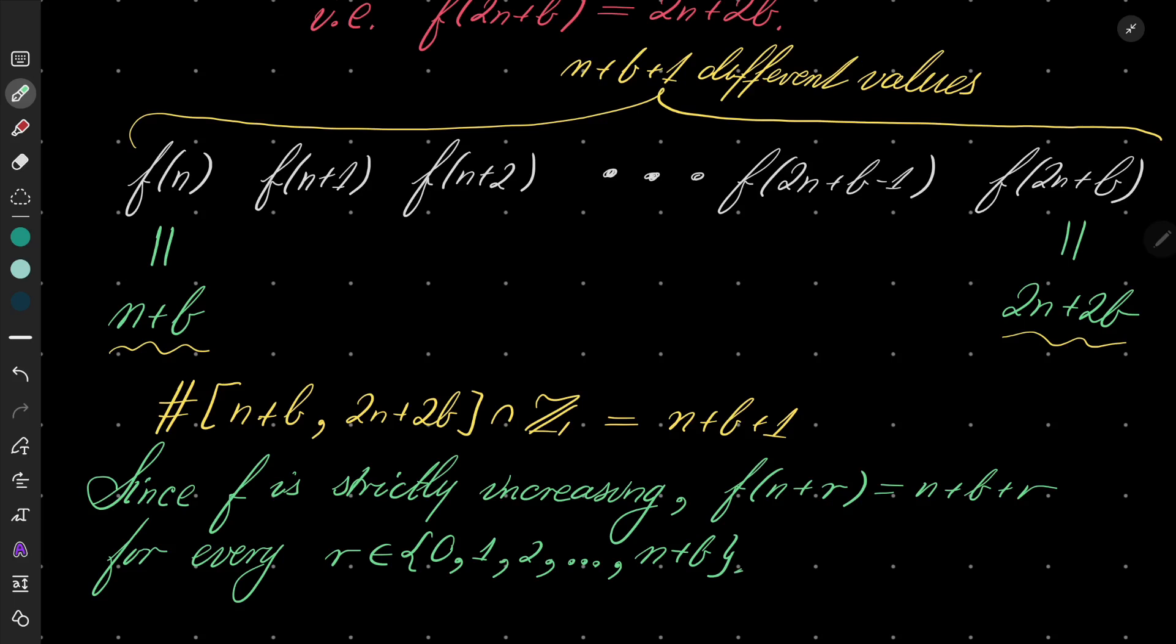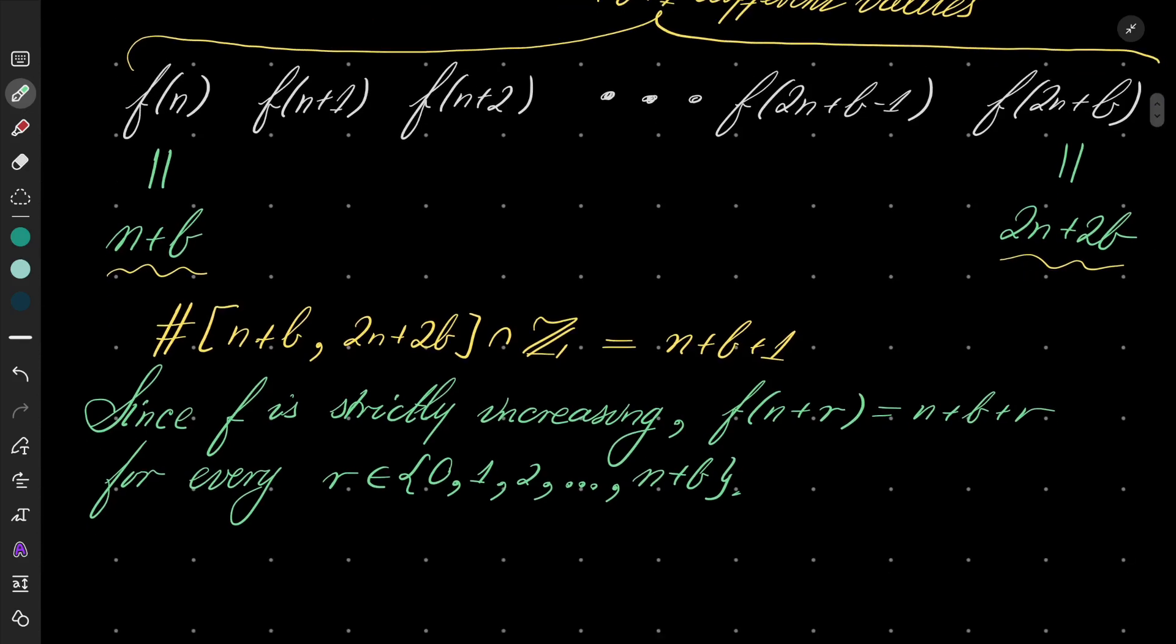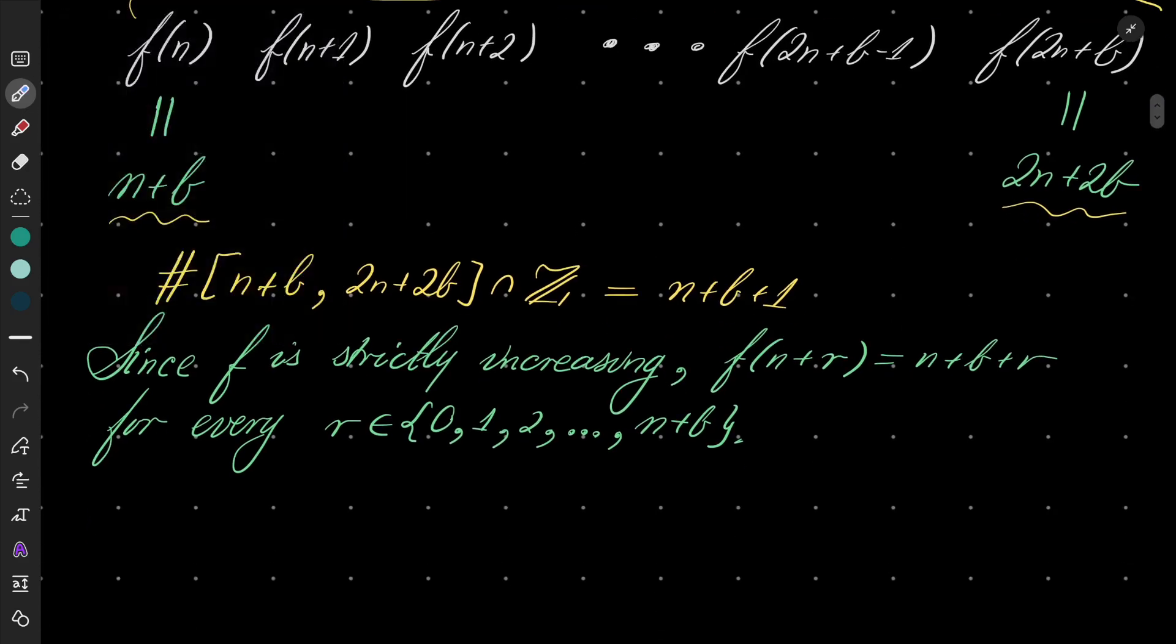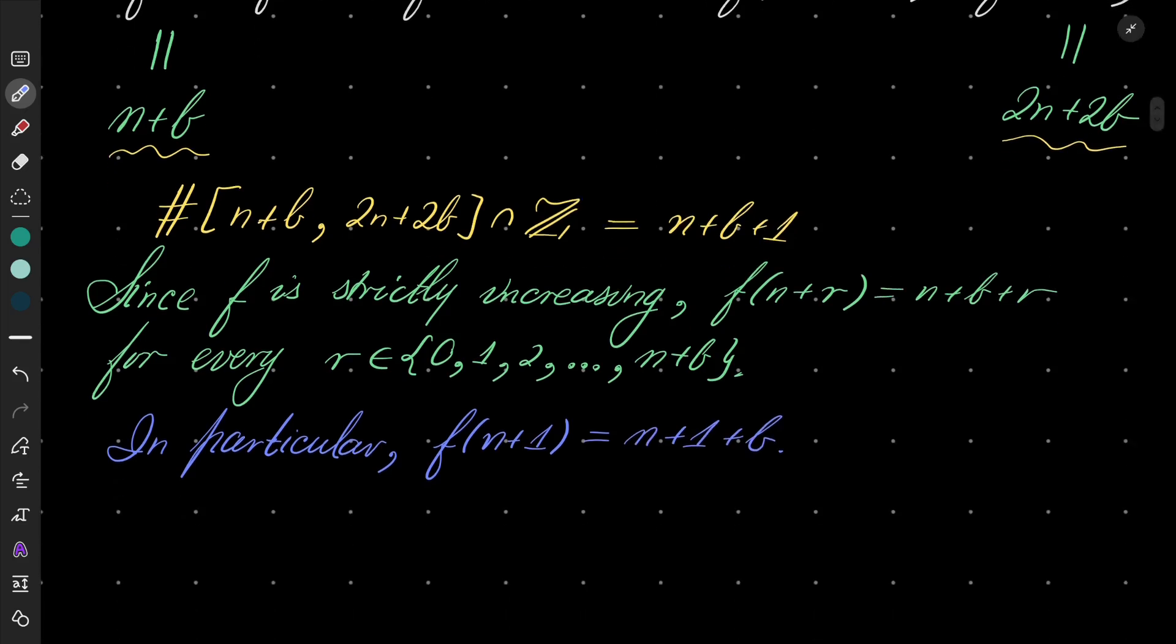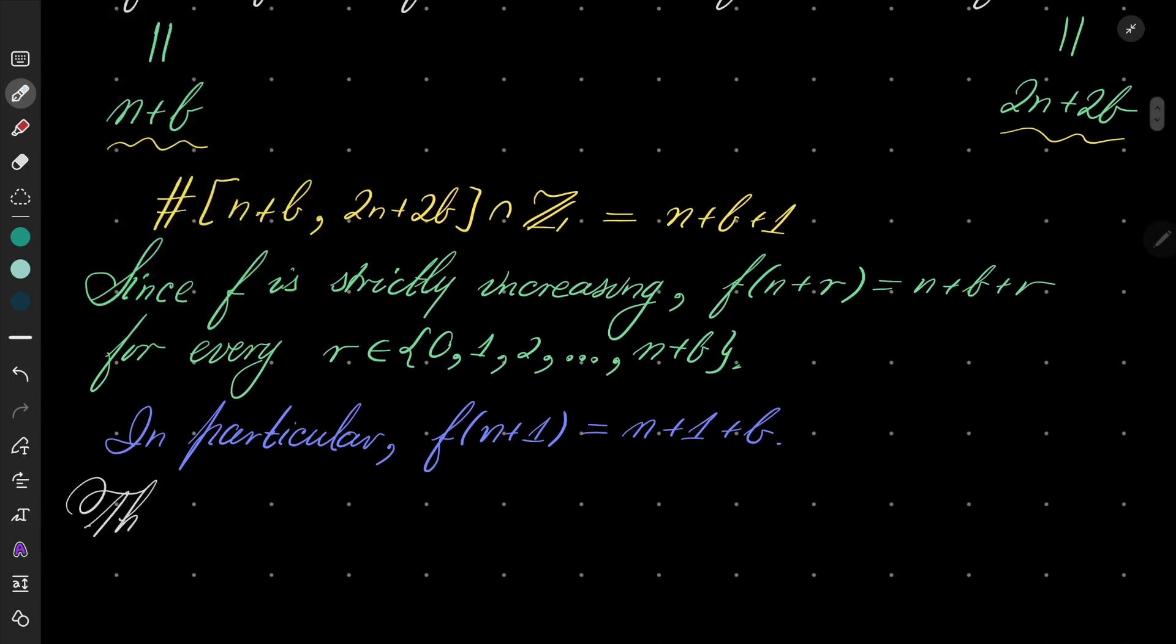So in particular, for r = 1, we have f(n+1) = n+1+b. And that is what we want for our inductive proof. And to be honest, that closes our induction proof.